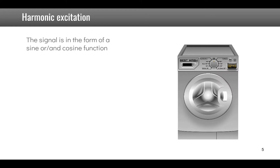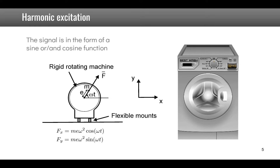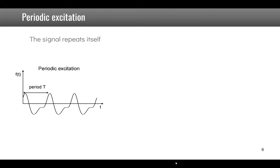An example of harmonic excitation is rotating machines. If a machine has a rotor with a certain unbalance — where the center of mass is not exactly at the center of rotation — forces are created. These forces are Me·ω² cos(ωt) in the x direction and Me·ω² sin(ωt) in the y direction. The force is a rotating vector which, projected onto x and y, results in cosine and sine harmonic excitation.